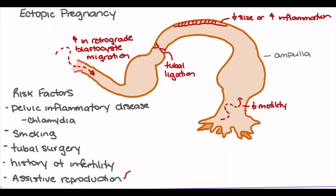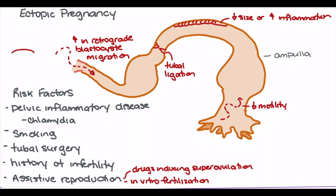Finally, some assistive reproduction techniques are also correlated with higher chances of ectopic pregnancy. Drugs that induce superovulation can lead to an increased number of ovum in the fallopian tubes, increasing the chances of a blastocyst implanting there. In vitro fertilization has also been shown to increase chances of ectopic pregnancy. Additionally, IUD insertion, a type of contraceptive device, can also increase the chances of ectopic pregnancy.